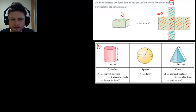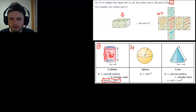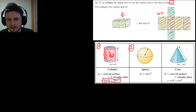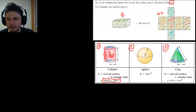For some surface areas, formulas are given on the formula sheet. For a cylinder, the surface area is two pi r times height plus two pi r squared — you find the area of the curved surface and then add the two circular ends. For a sphere, the surface area is four pi r squared. For a cone, the surface area is pi r squared plus pi r times l, where l is the slant length.